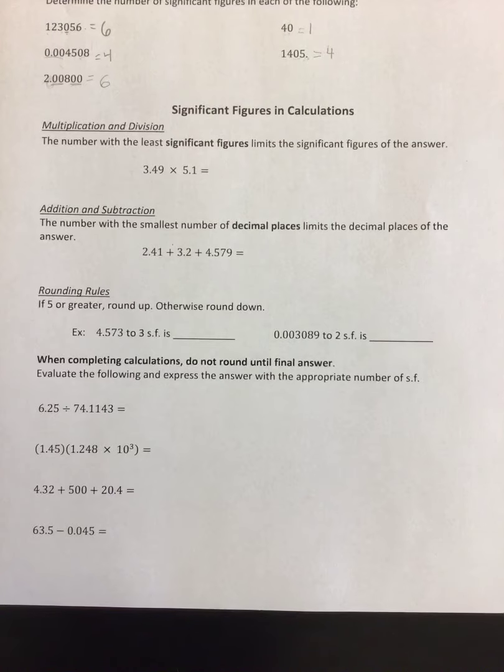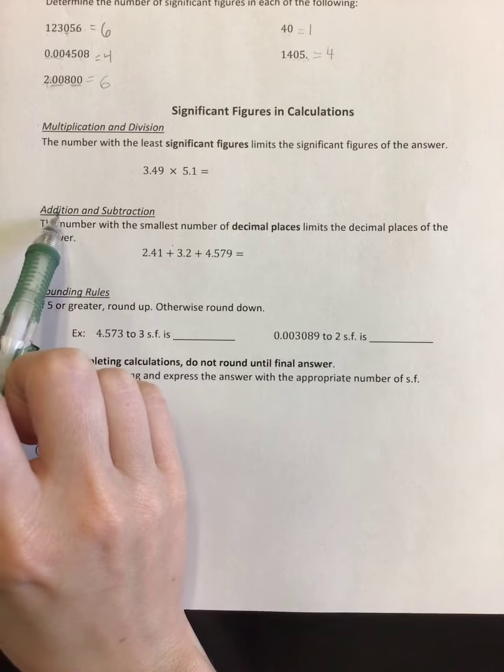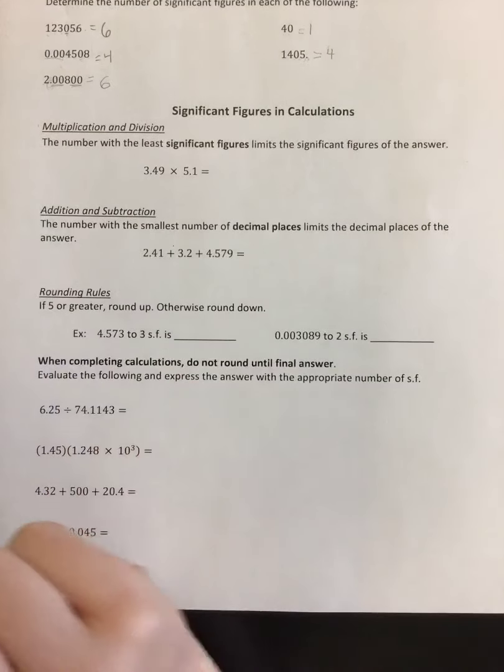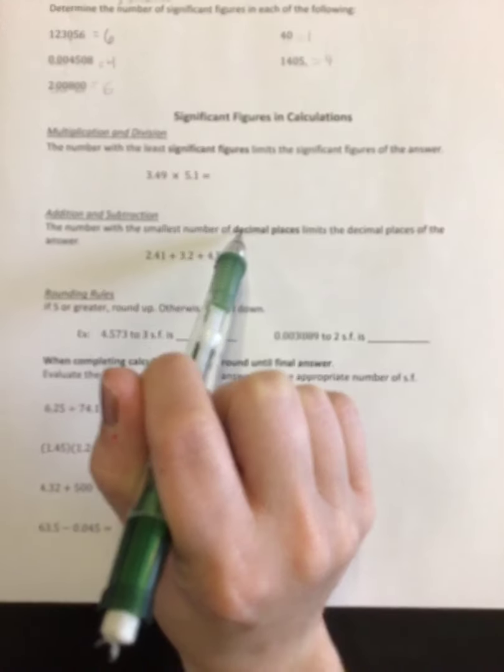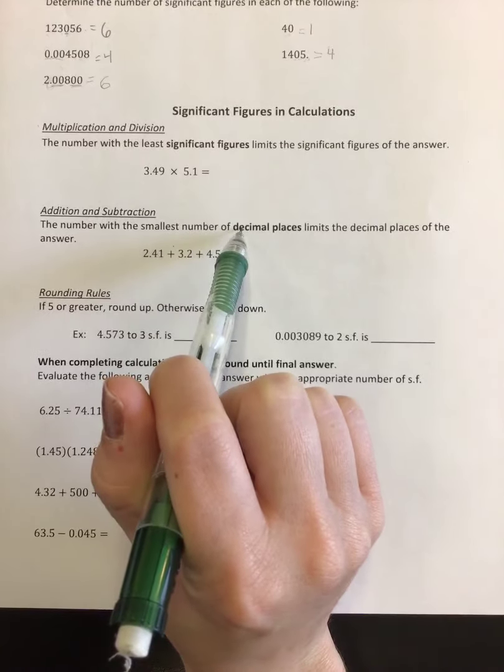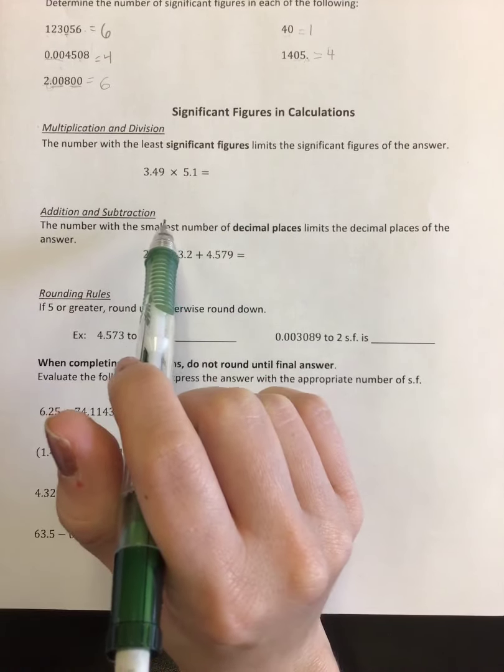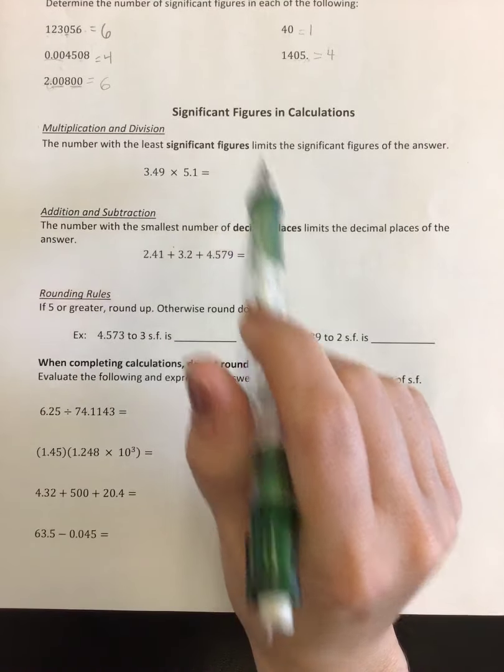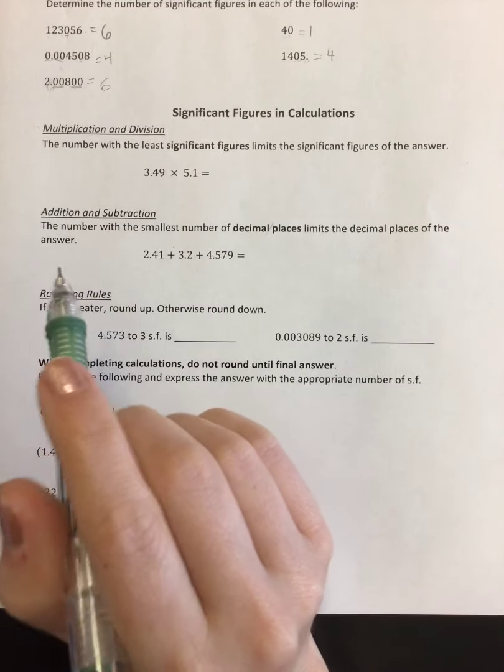So the tricky thing about this is that multiplication and division and addition and subtraction have different rules for sig figs. So you need to be able to look at a problem and say, this is a multiplication problem and think of this rule. You need to be able to look at a problem and say, this is addition and subtraction, I need to use this rule. Or you need to be able to think of both in the same problem. I started by adding and subtracting these things together, so I use this rule first. And then after that, I multiply, then I use this rule. These are very, very important.